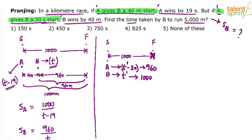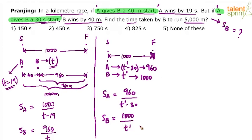Now in both cases we have expressions for the speeds of A and B. We can compare these. Speed of A from scenario 1 equals speed of A from scenario 2: 1000 divided by (T minus 19) equals 960 divided by (T' minus 30). Speed of B from scenario 1 equals speed of B from scenario 2: 960 divided by T equals 1000 divided by T'. Find either T or T', then substitute to get the speed of B.